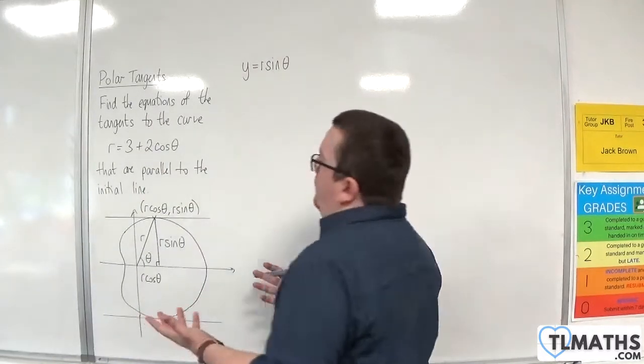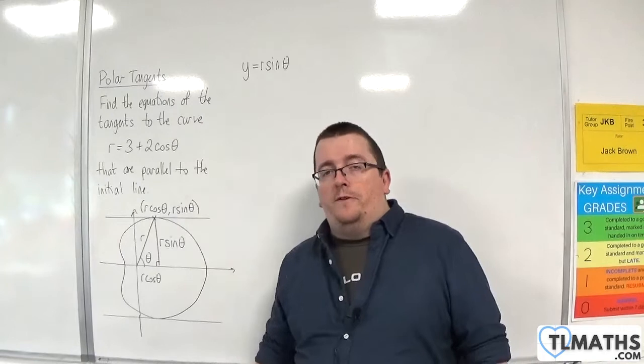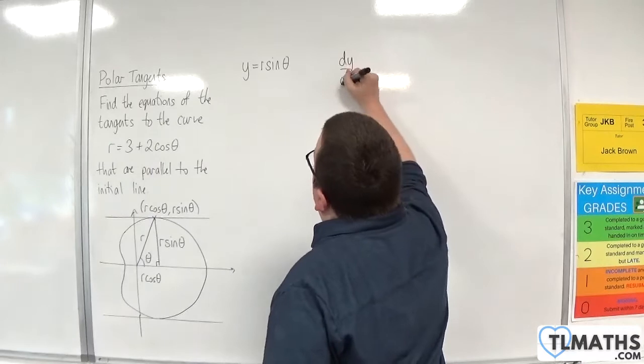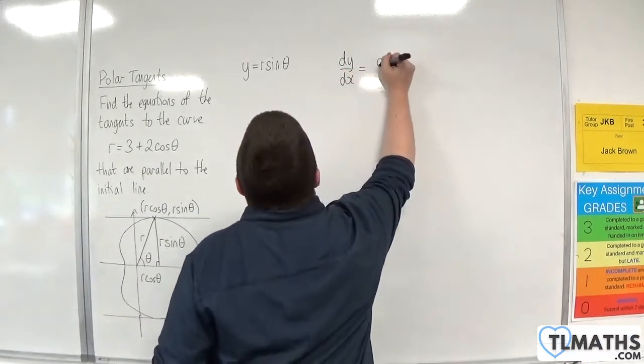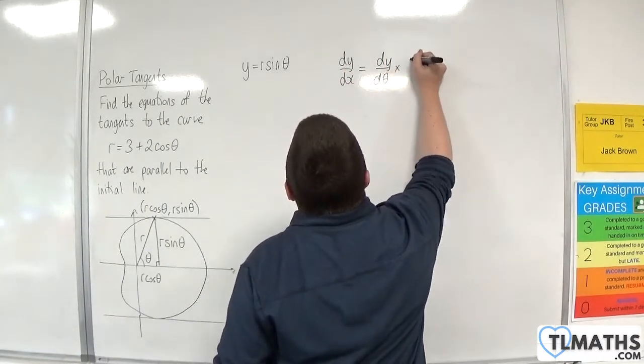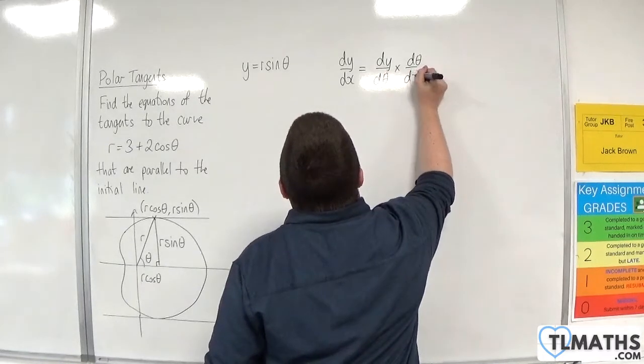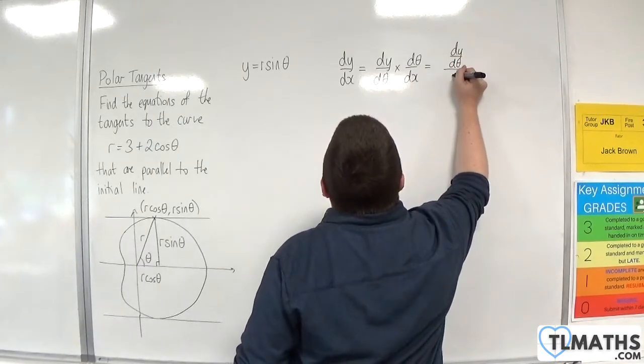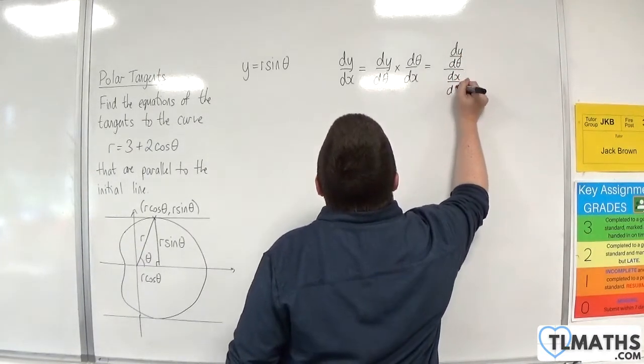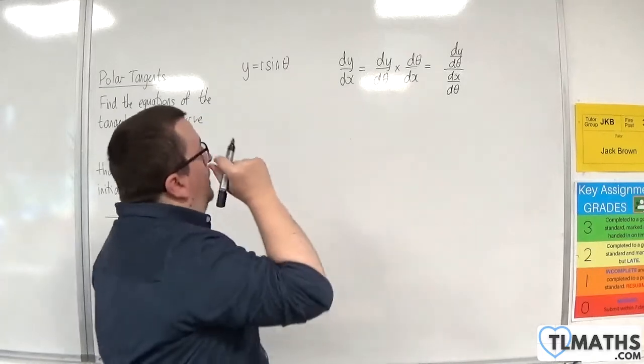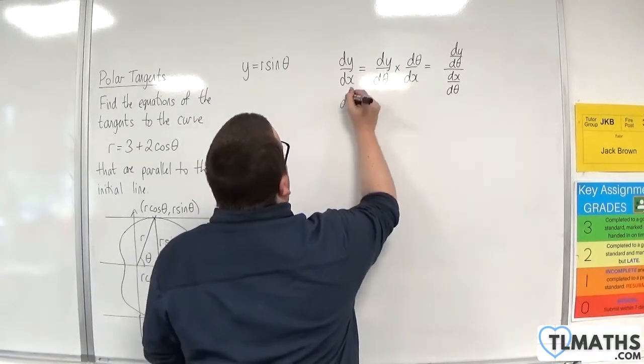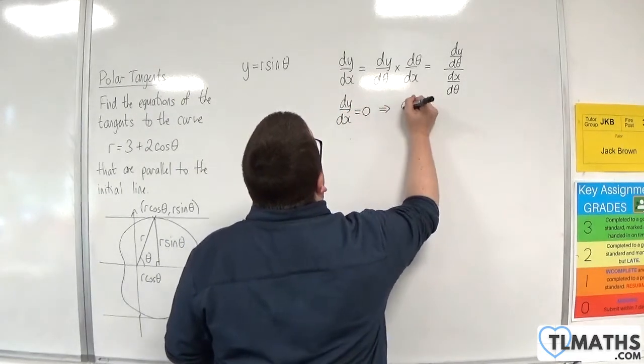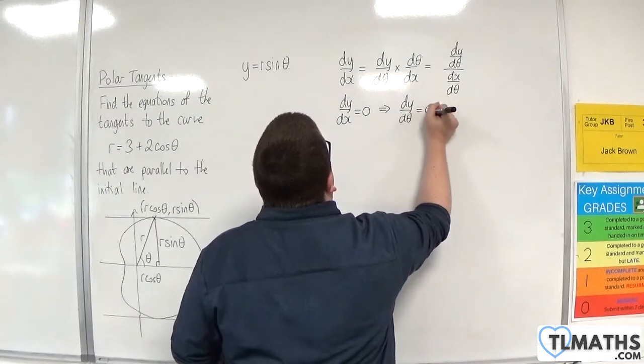Now, I know that that point is a stationary point, so dy by dx has got to be 0. So, dy by dx by the chain rule is dy by d theta times by d theta by dx, which is the same as dy by d theta over dx by d theta. So, if dy by dx has got to be 0, then that implies that dy by d theta will be 0.